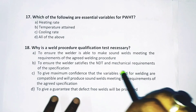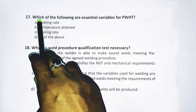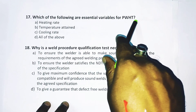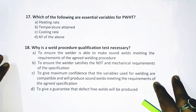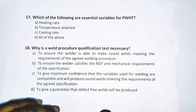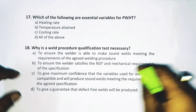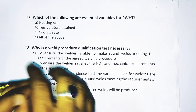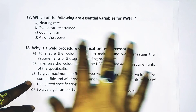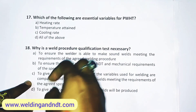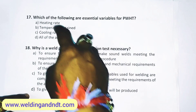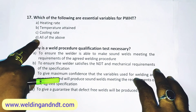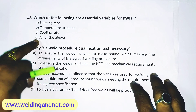Finally, question number 17: Which of the following are essential variables for PWHT? Heating rate, temperature attained, cooling rate, or all of the above. Whenever you are doing PWHT, there should be controlled heating, controlled soaking, and controlled cooling. Hence all three are essential variables, and the answer is D — all of the above.